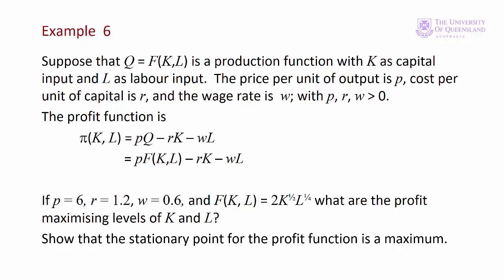This is Example 6 from Module 2 in Lecture 7. We have a production function where the number of units of output depends on the units of capital input and the units of labour input. We also have the price of a unit of output, the cost per unit of capital R, and the per unit wage rate. From this we determine a profit function — revenue minus costs. Revenue is price times quantity. The costs are the number of units of capital times the cost of capital and the number of units of labour times the wage rate.